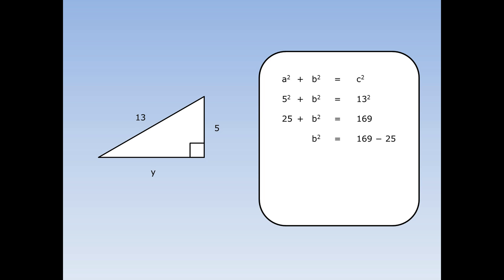Now 25 plus B squared equals 169. Really I want to get B squared by itself, so I'm going to take away 25 from both sides. 25 take away 25 is nothing. The B squared is still there. I've got 169 minus 25 on the other side. 169 minus 25 is 144, so B squared equals 144. But I don't really want to know what B squared is — I want to know what B is. So I'm going to square root both sides. The square root of B squared is B, and the square root of 144 is 12. So on this example, Y, one of the shorter sides equals 12.